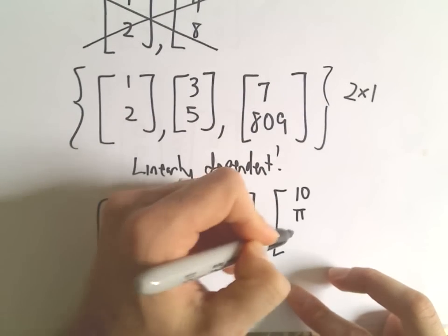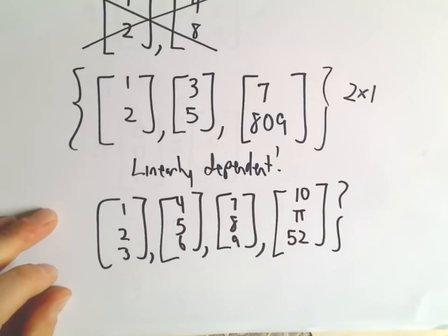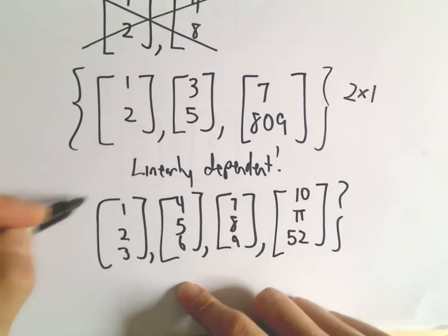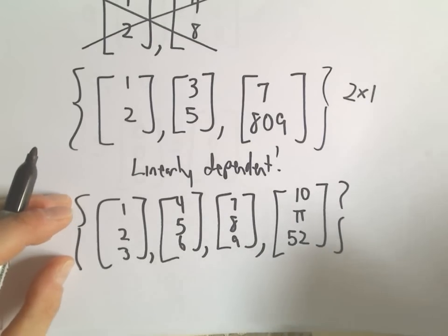like [10, π, 52], these vectors are now going to be linearly dependent. We've got 4 vectors—that's more than the 3×1 size—so these are now linearly dependent.